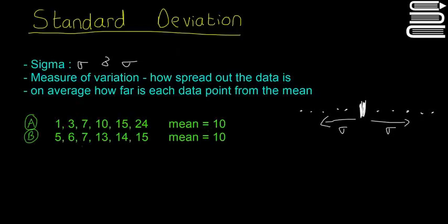And then for B, we have 5, 6, 7, 13, 14, 15. So they both have the exact same mean, except A is much more spread out. So it goes the whole way up from 1 to 24, whereas this B only goes from 5 to 15.